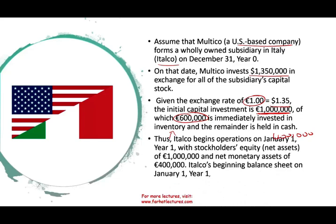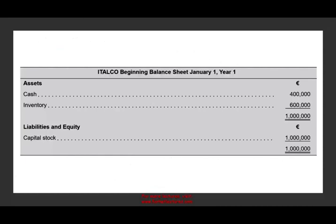The Italian company began operations on January 1st with net assets of 1 million euros and a net monetary asset position of $400,000 — that means cash and receivables. The net monetary position is cash and receivables minus current liabilities and debt. We only have $400,000 of cash, so that is the net monetary position. The net asset is 1 million euros, and we have inventories of $600,000 to start with.